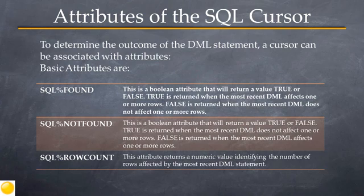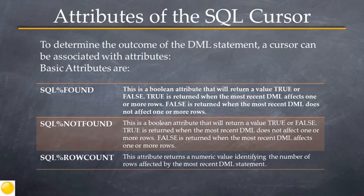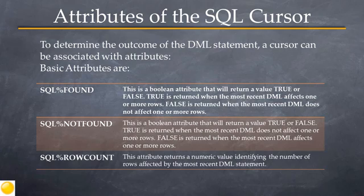SQL%FOUND is an attribute that returns a true or false value. A value of true is returned when the most recent DML statement executed by the SQL cursor affects one or more rows. It will return false if the most recent DML does not affect one or more rows.